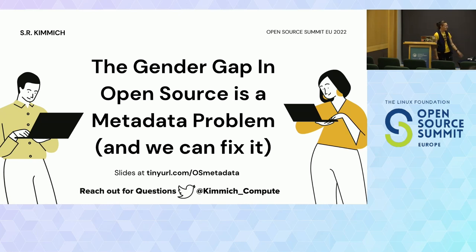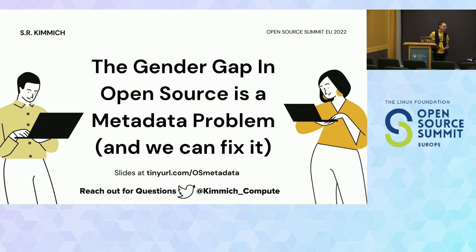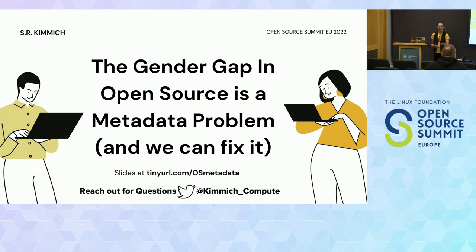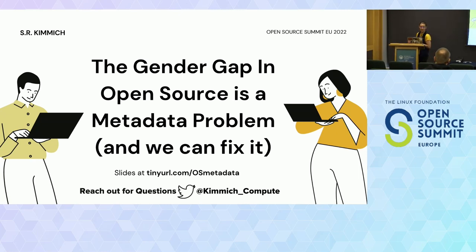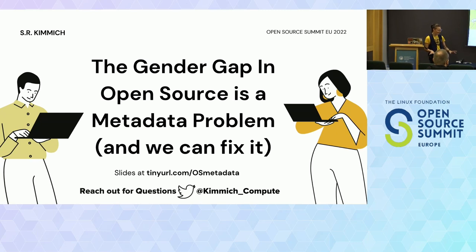Today we are going to talk about how the gender gap in open source is a metadata problem. Because I do believe it is a metadata problem, it's something we can solve through the engineering of our interfaces and the way that we provide contextual information around developer decision-making. My name is Sal Kimmich, and I do care about diversity in open source. But I've never given a diversity talk before, so this might be a little bit unhinged. I'm going to have a lot of fun — and I'm very excited to be giving a talk without a tech demo for once in my life.